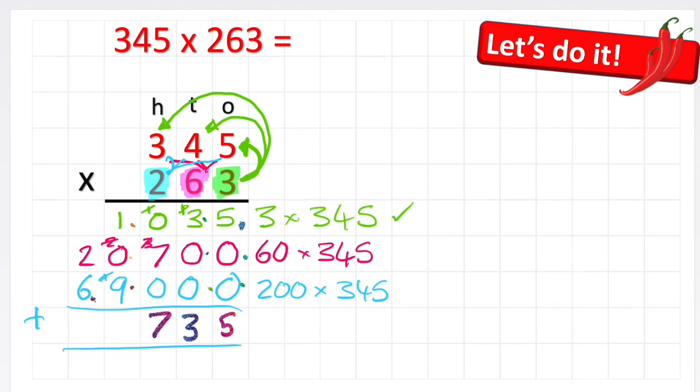1 plus 0 plus 9 is 10. 2 plus 6 plus my 1 is 9. So my answer to 345 times 263 is 90,735. Give myself a big tick. And there we have it. That is multiplying a three digit by a three digit number as quickly as possible.